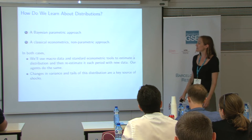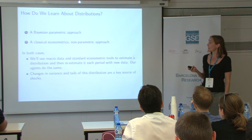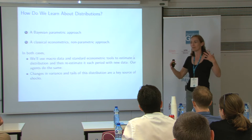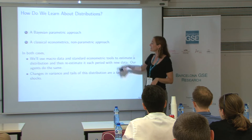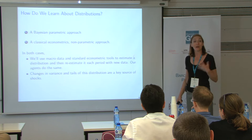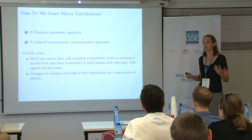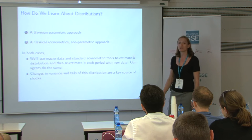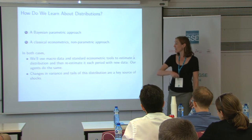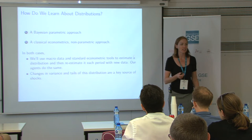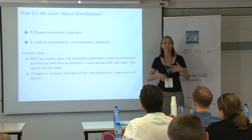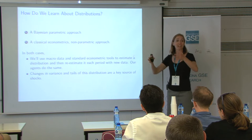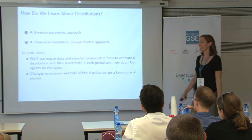So we're going to explore this possibility and think about how we might write down models where people are changing their beliefs about a distribution, and that's causing fluctuations in uncertainty. How do we learn about distributions? There are two possible ways: one is a Bayesian parametric approach — learning about parameters of a specified functional form; the other is a classical econometrics non-parametric approach. We'll illustrate both ways of learning about distributions and how they affect uncertainty and tail risk.